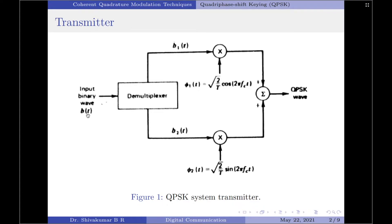The input binary wave is split into two separate binary waves. The first binary wave, which is b1(t), consists only of the odd numbered bits in the input binary sequence, whereas the second binary wave represented by b2(t) consists of only the even numbered bits of the input binary sequence.